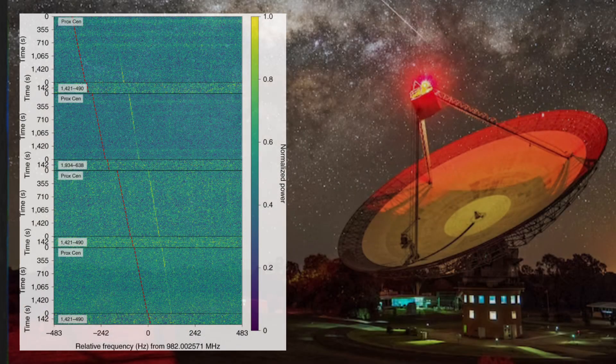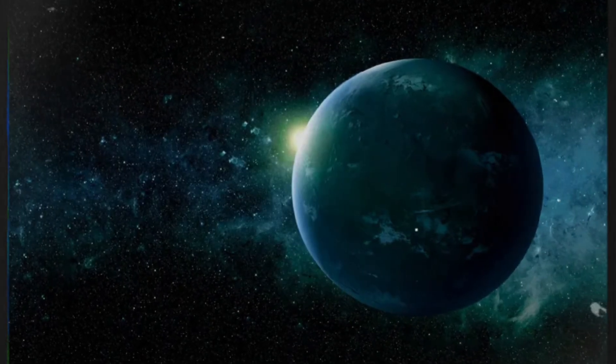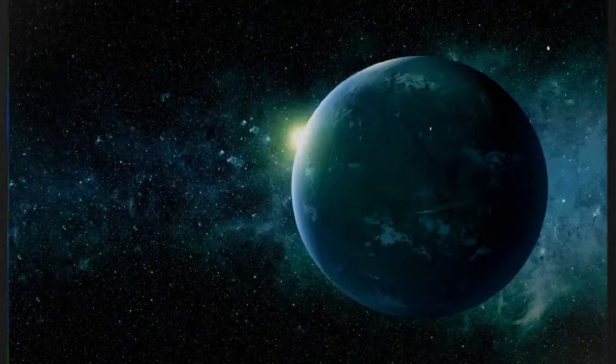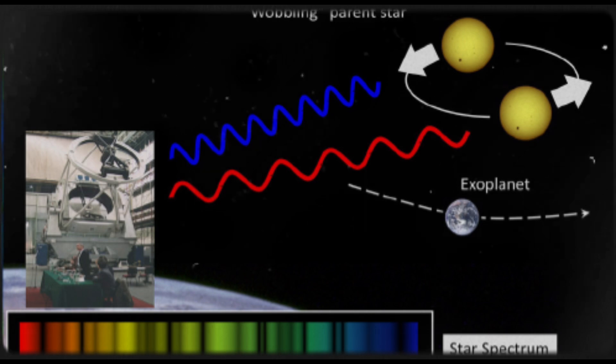Upon further investigation, the source of the signal was identified as Proxima b, an exoplanet discovered by astronomers in 2016 using the radial velocity method.